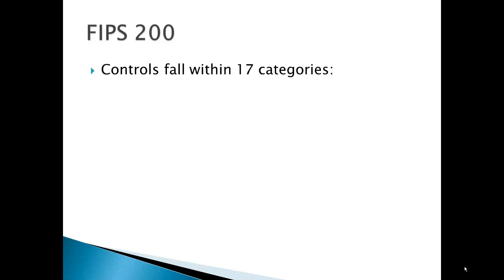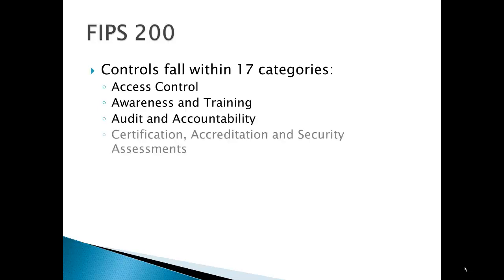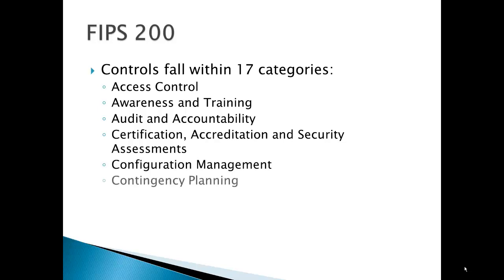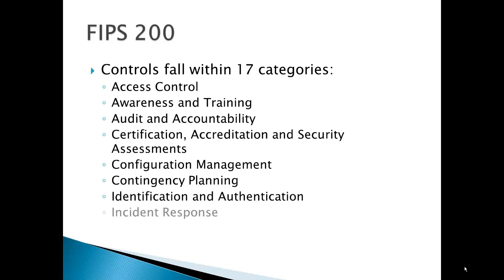The controls fall within 17 categories. This may look a little like ISO 27000, but it is not. Controls — or countermeasures as they're sometimes called in other contexts — are called controls here. The first set includes: access control, awareness and training, audit and accountability, certification and accreditation and security assessments — where certification and accreditation mean a system and its overall environment has been reviewed, assessed, and deemed secure enough for production use — configuration management, contingency planning, identification and authentication, and incident response.